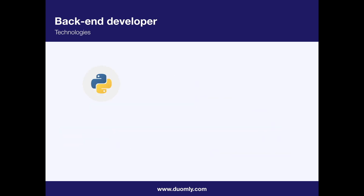Let's speak about technologies used on the backend. There are more programming languages that can be used on the backend than on the frontend. The most popular ones are Python; Java with Spring Framework, used by many big companies; C# with .NET from Microsoft, also popular in big companies; Node.js, which is not a programming language but a technology that allows using JavaScript on the backend side; and MySQL, used to work with SQL databases. I wanted to highlight the most popular ones that will help you find a job in backend development quickly.